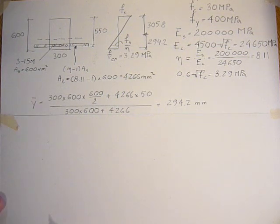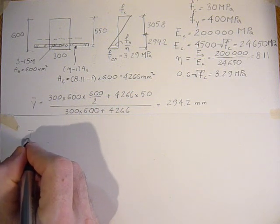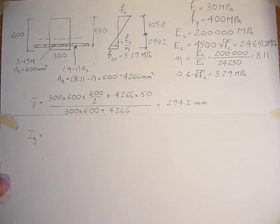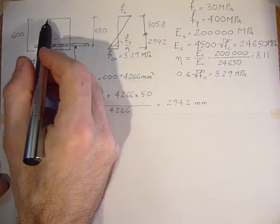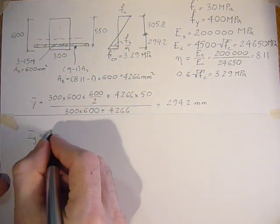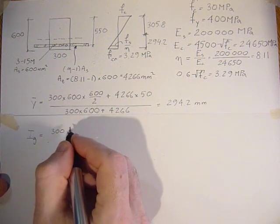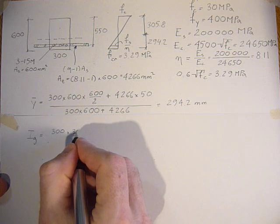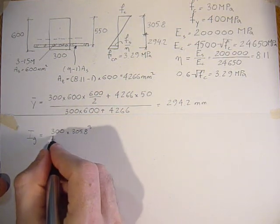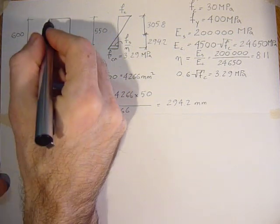Let's calculate the gross moment of inertia. I_G equals the moment of inertia above the neutral axis, which is this concrete rectangular portion. It's 300 wide and 305.8 in height cubed, divided by 12,